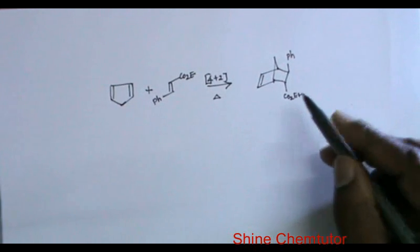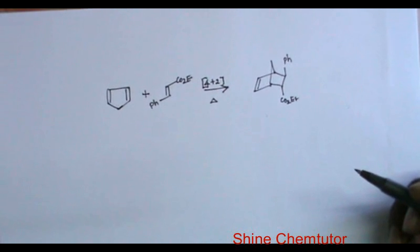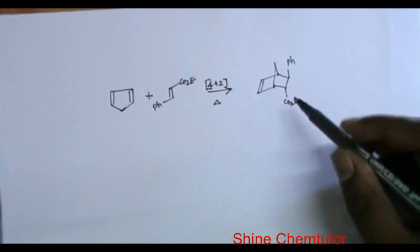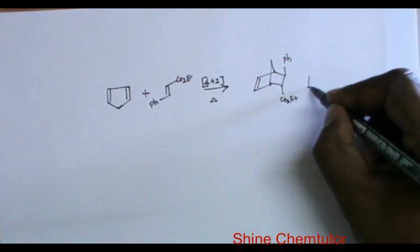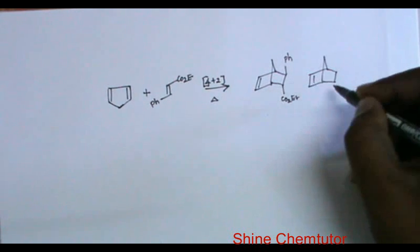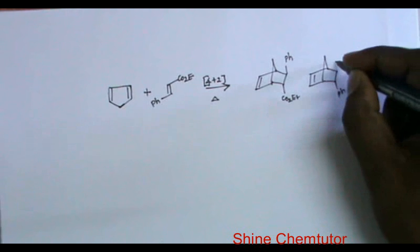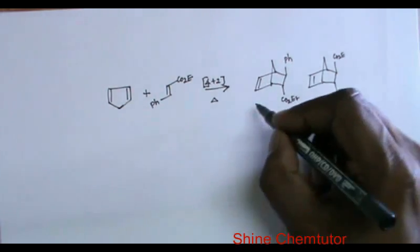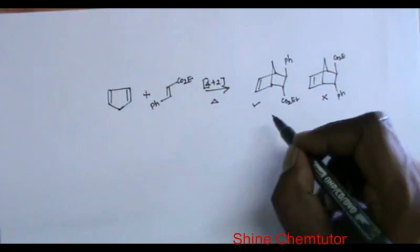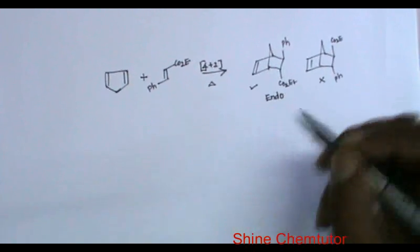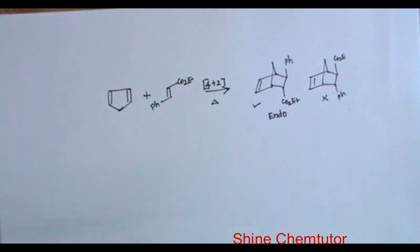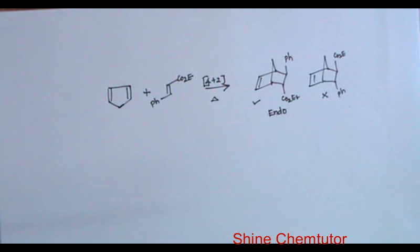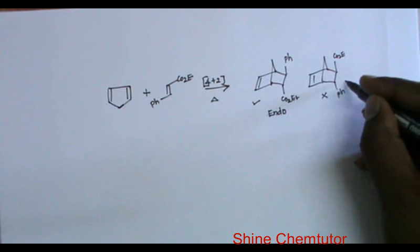In two options, they are given this bicyclic compound. In both cases, CO2Et is at the bottom and Ph is on the top. There is another possibility to get a compound like this — CO2Et on the top, Ph at the bottom. But this is more preferred because this is the endo product, what we call endo-selectivity, due to secondary orbital interaction between this carbonyl and the double bond. This is more preferred. Fortunately, they have not given this particular option.